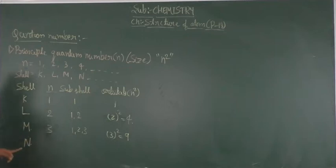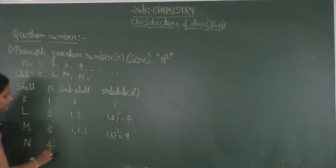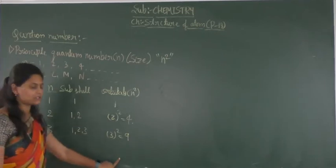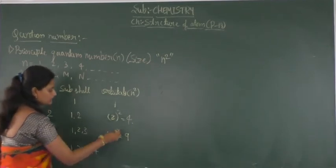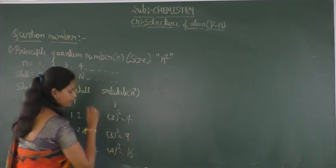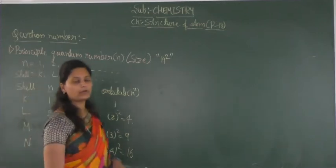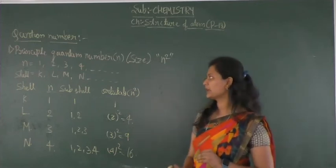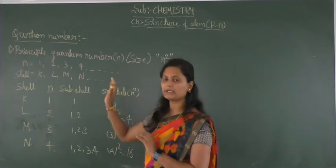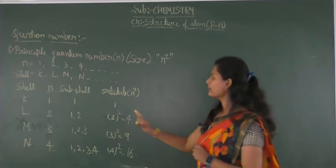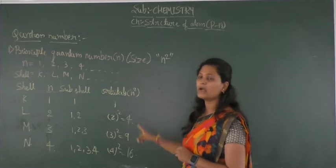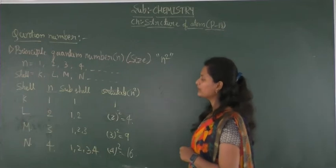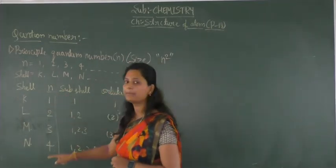For the N shell, the principal quantum number is 4, so total subshells are 4 and total orbitals = 4² = 16. The principal quantum number explains the number of subshells and orbitals present in the main shell. The principal quantum number also represents the size of the atom or orbital.